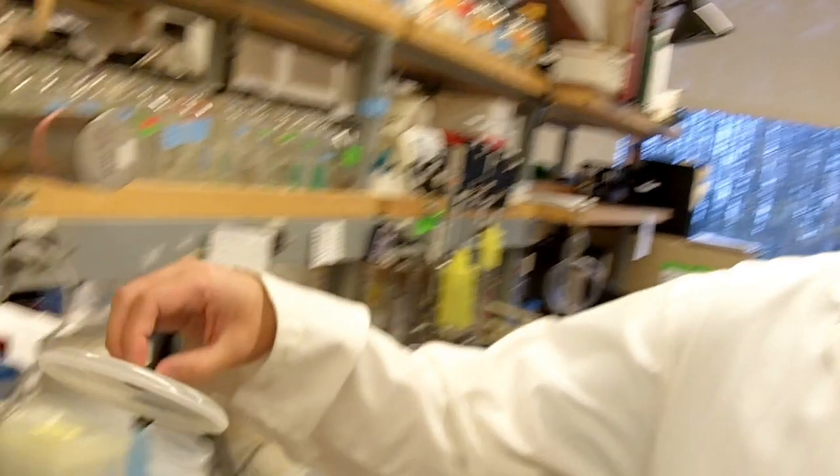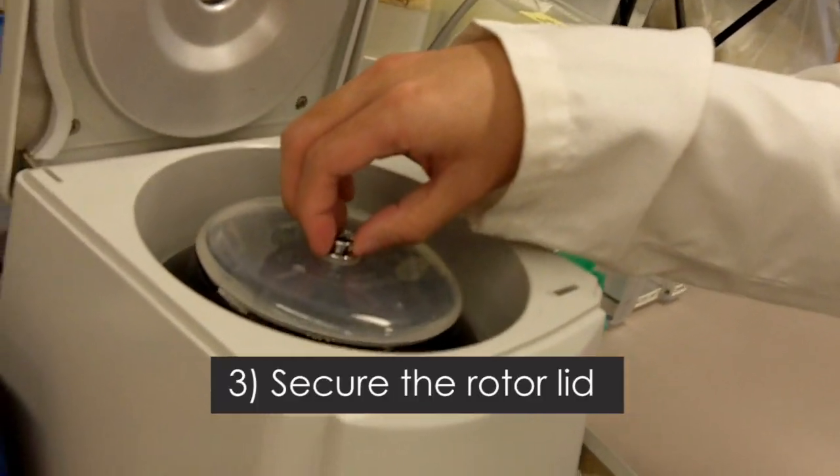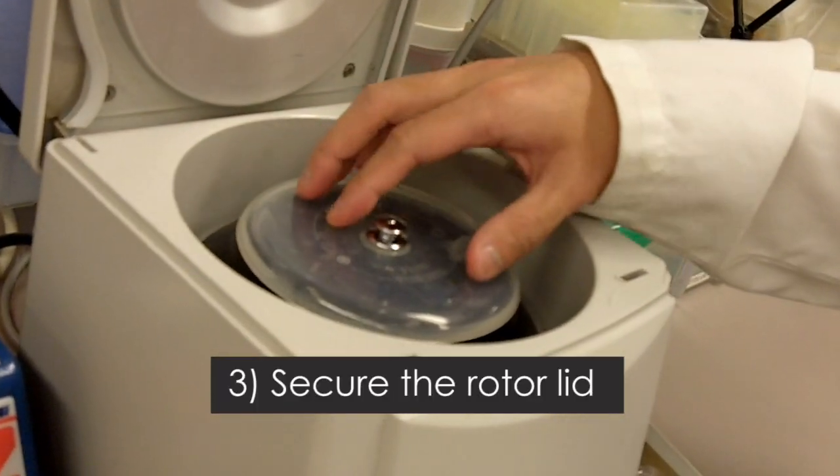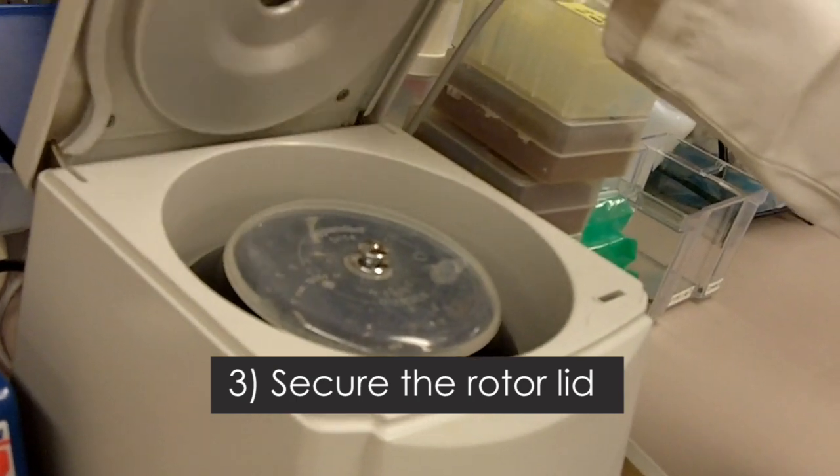The third thing you need to do when you use a centrifuge is that you always have to secure the rotor lid onto the rotor, like that. Make sure it's secured, then you can close the centrifuge.